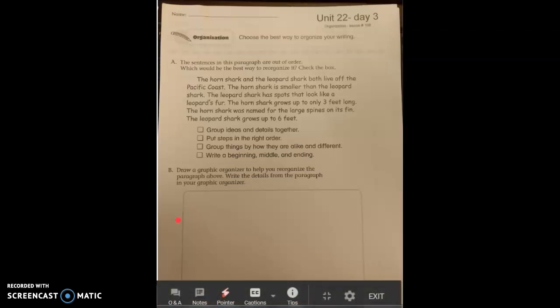Now let's go back to the horn shark. The horn shark has large spines on its fin. That's what you should write on the left side. Then on the right side, for the leopard shark, what does a leopard shark have? Yes, the leopard shark has spots that look like a leopard's fur.